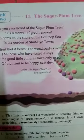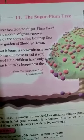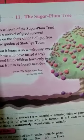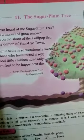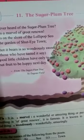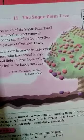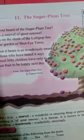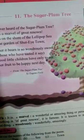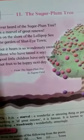So children, we read a poem named The Sugar Plum Tree. It is about an imaginary tree which has amazing qualities. The tree appears in the dreams of young children. It grows near the lollipop sea and its fruit is very sweet. Children love to eat the fruit of the sugar plum tree because it makes them happy the next day.